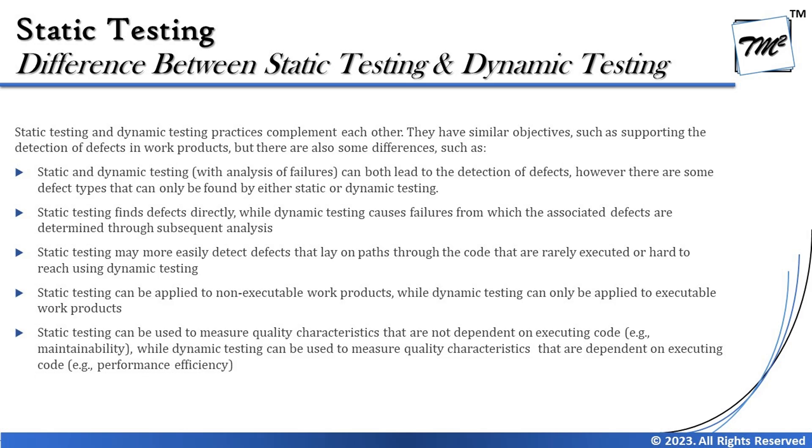Static testing can be applied to non-executable work products, while dynamic testing can only be applied to executable work products. For example, a user manual is just documentation — a booklet given with the product — it is not executable, so you can only review it. You can't subject it to dynamic testing, but a user manual is certainly a good candidate for static testing.